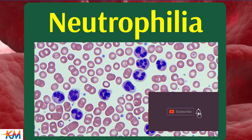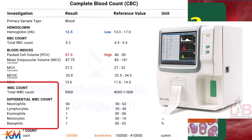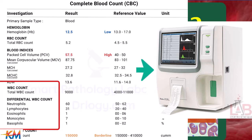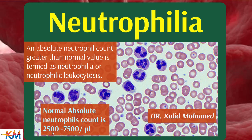Neutrophilia refers to an increase in neutrophil counts in the bloodstream. As seen in the picture, many mature neutrophils are present in the blood. Inside the medical laboratory, after performing CBC tests, the absolute number of neutrophils is evaluated — representing neutrophils per thousand. Do not use neutrophil percentage for evaluation. Any increase in the absolute neutrophil count greater than the reference range of 2,500 to 7,500 per microliter is termed neutrophilia or neutrophilic leukocytosis.